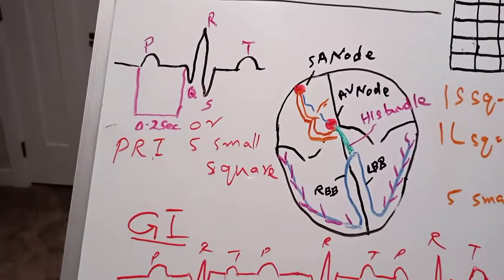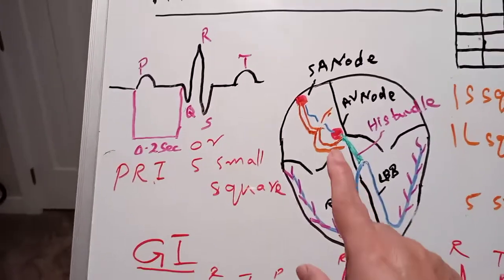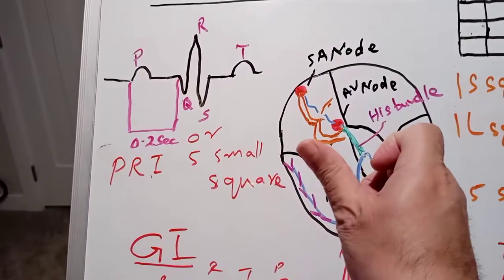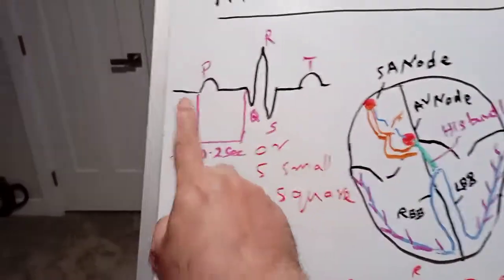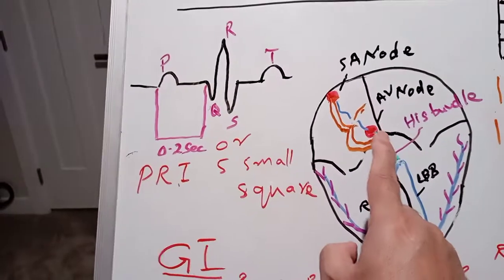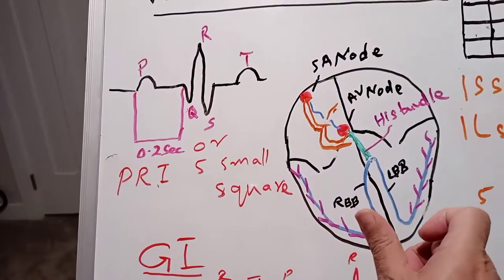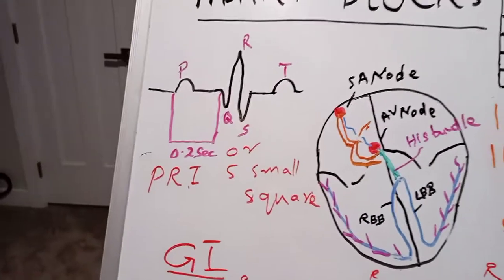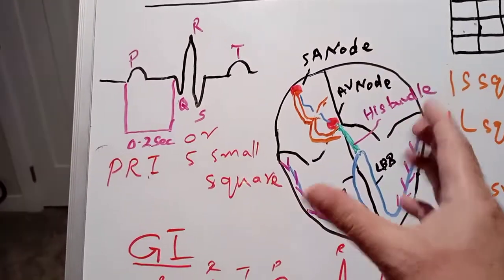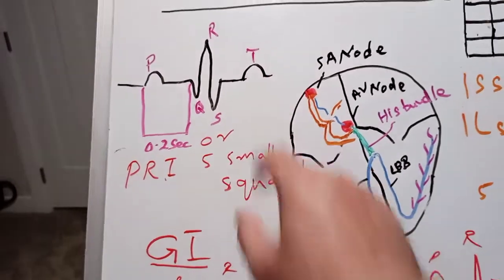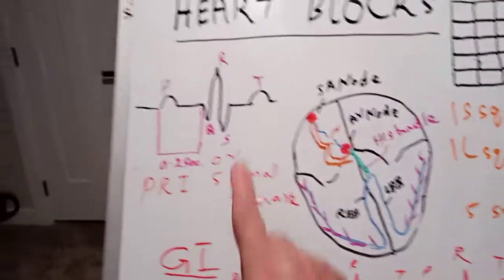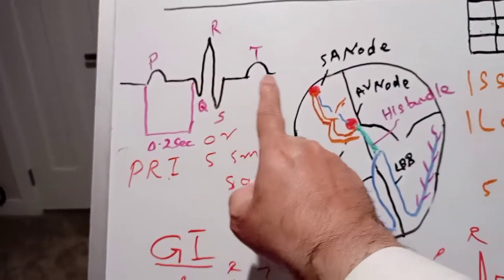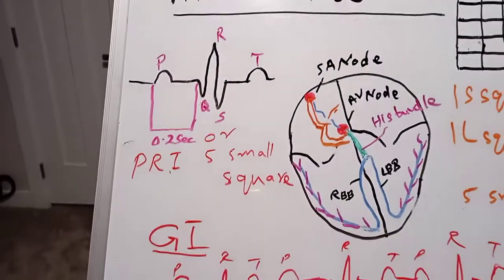Electricity produced at the SA node first reaches the atria, which contracts and gives us the P wave. Then it is allowed to go down and the ventricle contracts, giving us the QRS complex. Then the ventricle relaxes, giving us the T wave. So P wave is atrial contraction, QRS is ventricular contraction, and T wave is ventricular relaxation.